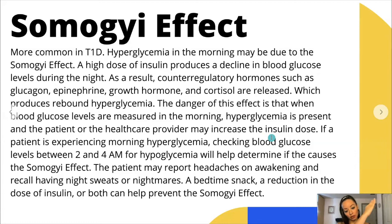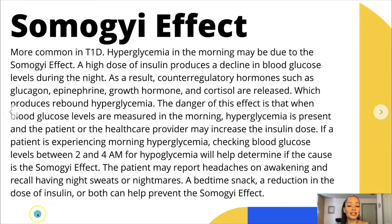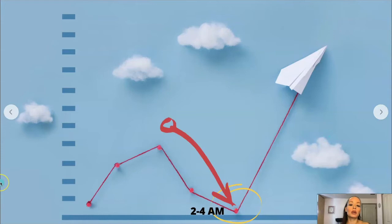If a patient is experiencing morning hyperglycemia, checking blood glucose levels between 2 and 4 a.m. for hypoglycemia will help determine if the cause is the Somogyi effect. The patient may report headaches on awakening — remember, symptoms of hypoglycemia is cold and clammy, needs some candy. The patient may also recall having night sweats or nightmares. A bedtime snack, a reduction in the dose of insulin, or both can help prevent the Somogyi effect.